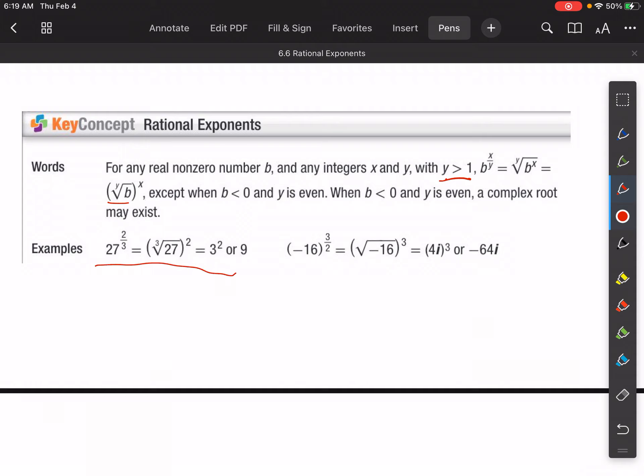So they give you some examples here. It's the same as what we were just talking about before. If you have 27 to the two-thirds, it's the same thing as the third root of 27 squared, right? Third root of 27 is 3. 3 squared is 9.